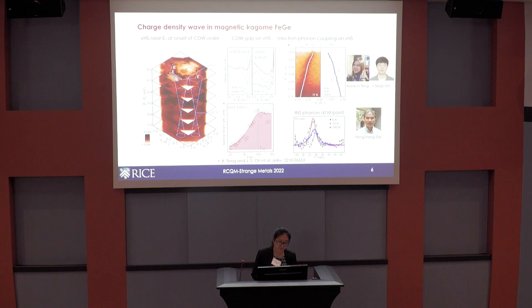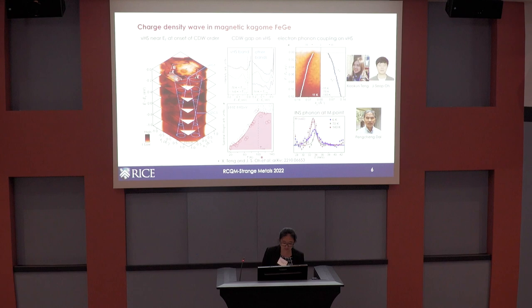From photoemission we observe a CDW gap opening on the Van Hove singularity bands. This is the EDC energy taken at all the Van Hove singularity bands at the M point, and you can see the gap opening there. That gap opening onset is roughly consistent with the onset of CDW order. However, if you look at other bands away from the Van Hove bands, we don't observe any gap opening — these gap openings occur only on the Van Hove band.